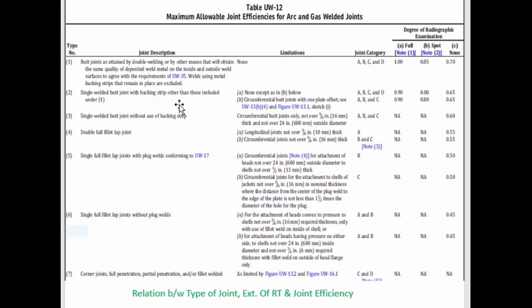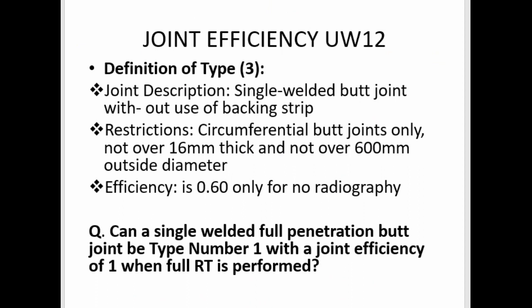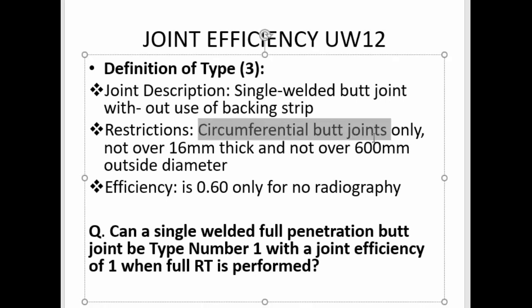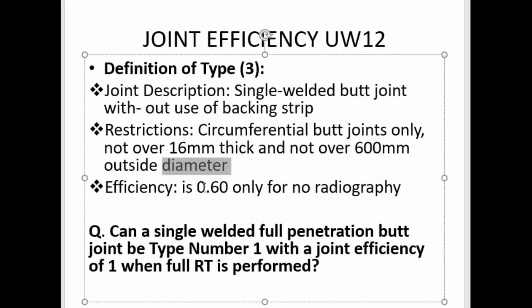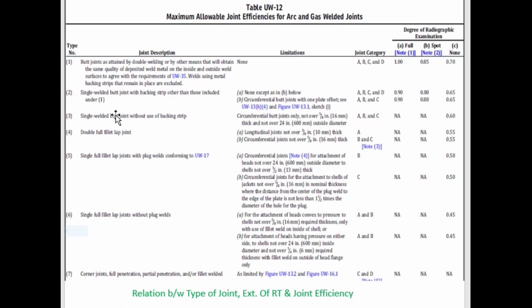Type 2 is a single welded butt joint with a backing strip other than those included under Type 1, with a joint efficiency of 0.90 for full radiography, 0.80 for spot radiography, and 0.65 for no radiography. Type 3 weld joints are single welded butt joints without a backing strip, with a restriction that they are only applicable to circumferential butt welded joints not over 16mm thick and not over 600mm outside diameter. The joint efficiency for Type 3 is 0.60, applicable only when no radiography is conducted.